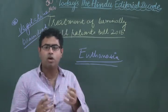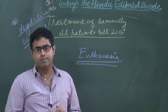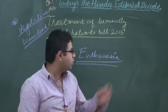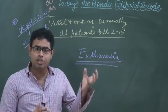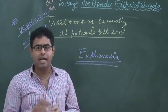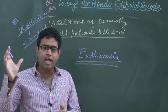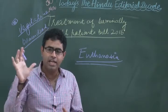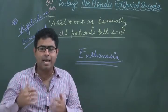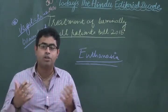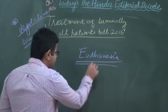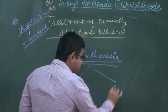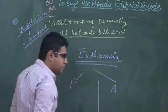Such patients are not living a dignified life, which is why we have the concept of euthanasia. Euthanasia means ending a life that is not yielding anything that should be exhibited out of the life of a human being. There are two types of euthanasia: passive euthanasia and active euthanasia.